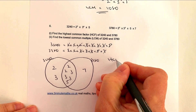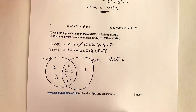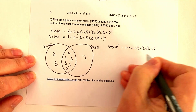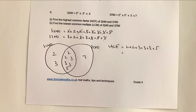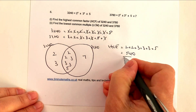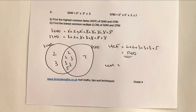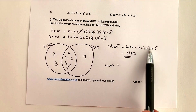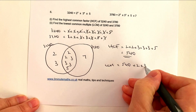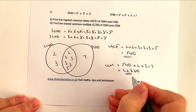The HCF is all the numbers in the middle multiplied together. In ascending order: 2 × 2 × 3 × 3 × 3 × 5 = 540. The LCM is all of the numbers multiplied together. Since the middle section already multiplies to 540, the LCM = 540 × 2 × 3 × 7 = 22,680.